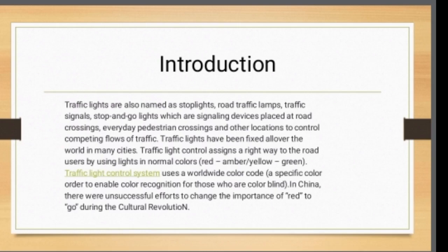Introduction: Traffic lights are also named as stop lights, road traffic lamps, traffic signals, and stop-and-go lights. They are signalling devices placed at road crossings, pedestrian crossings, and other locations to control competing flows of traffic. Traffic lights have been fixed all over the world in many cities, assigning right of way to road users by using lights in standard colors.